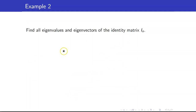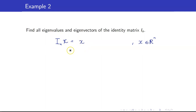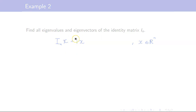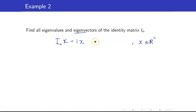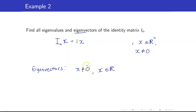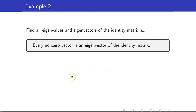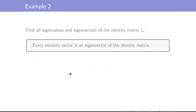Let us find all eigenvalues and eigenvectors of the identity matrix I_N, meaning the identity matrix of size N. If X is any vector in R^N, then by definition the identity times any vector in R^N is just equal to itself, and this equals 1 times X. But for X to be an eigenvector, X must not equal 0. Therefore, the eigenvectors are all elements in R^N such that X is not the zero vector, and the only eigenvalue is 1. Every non-zero vector is an eigenvector of the identity matrix.